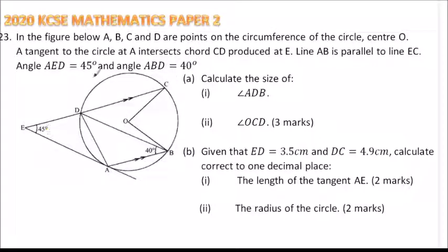So we are given these angles. So this is the circle A, B, C, D. We have angle AED is 45 as we are given here and angle ABD is 40.